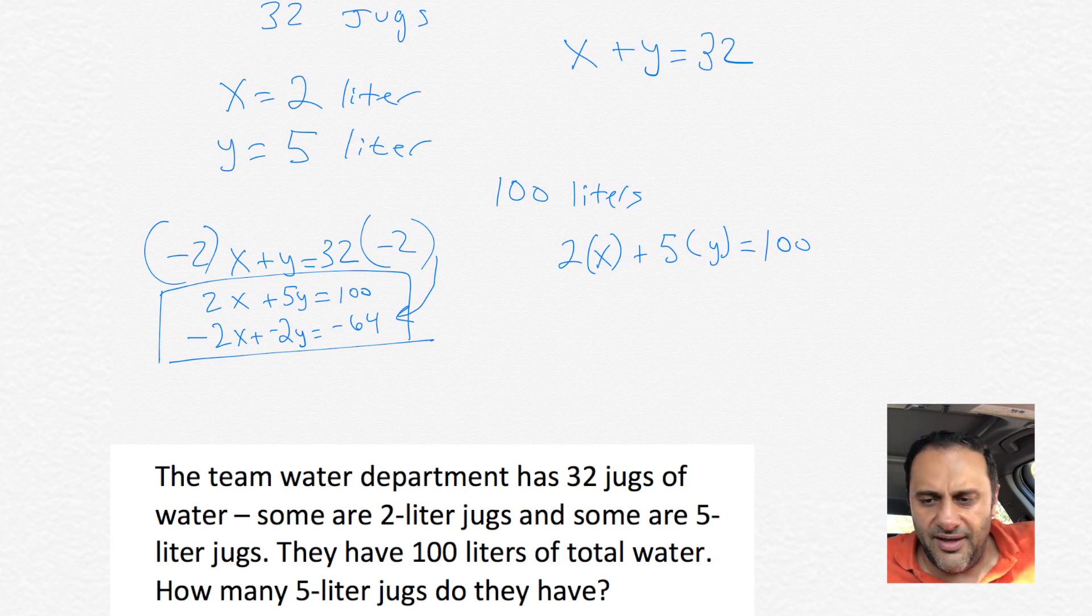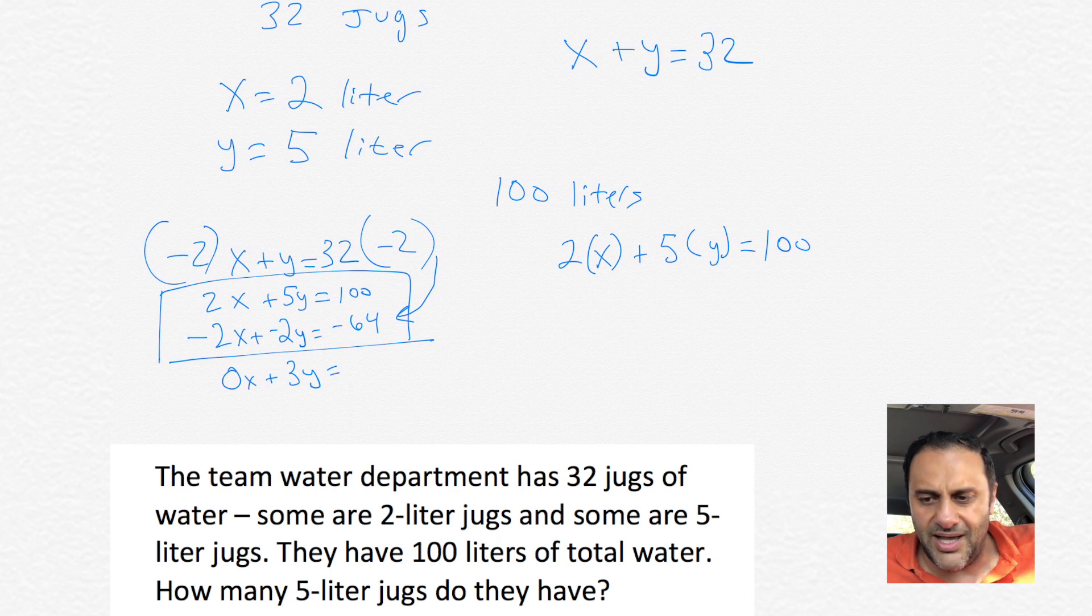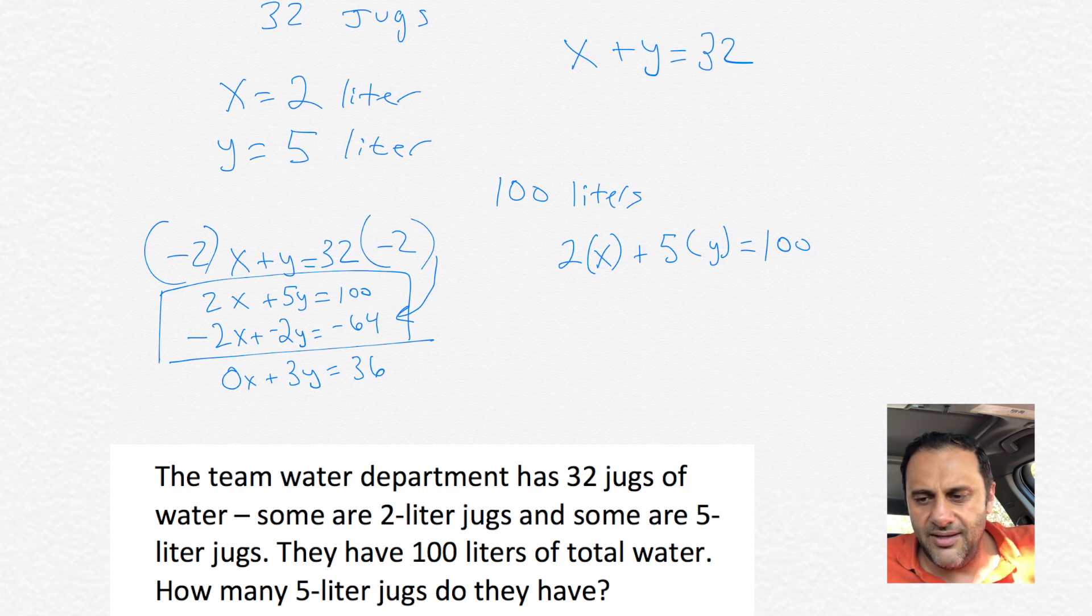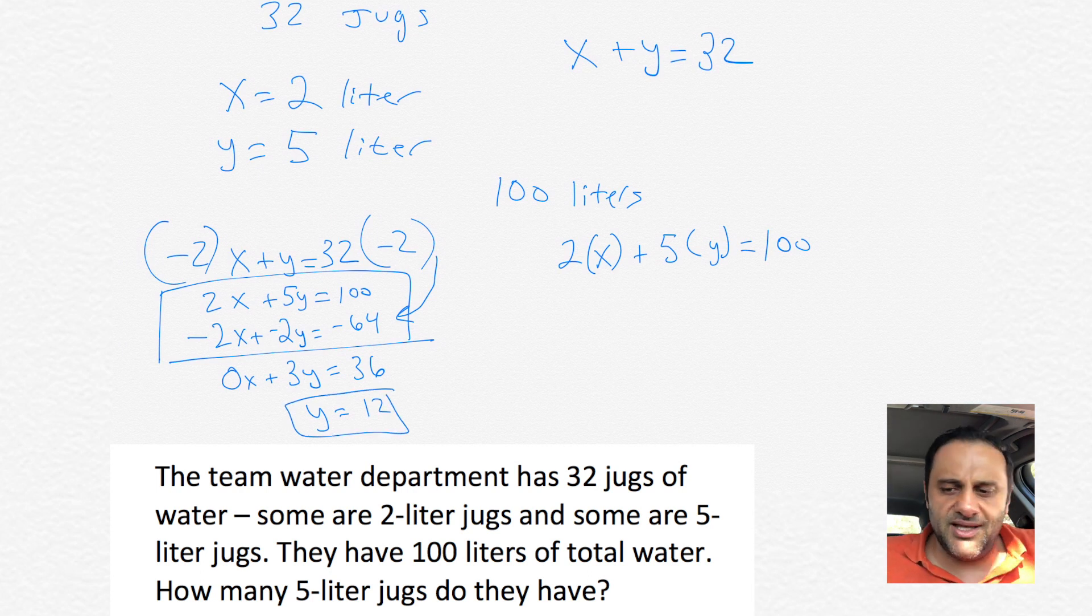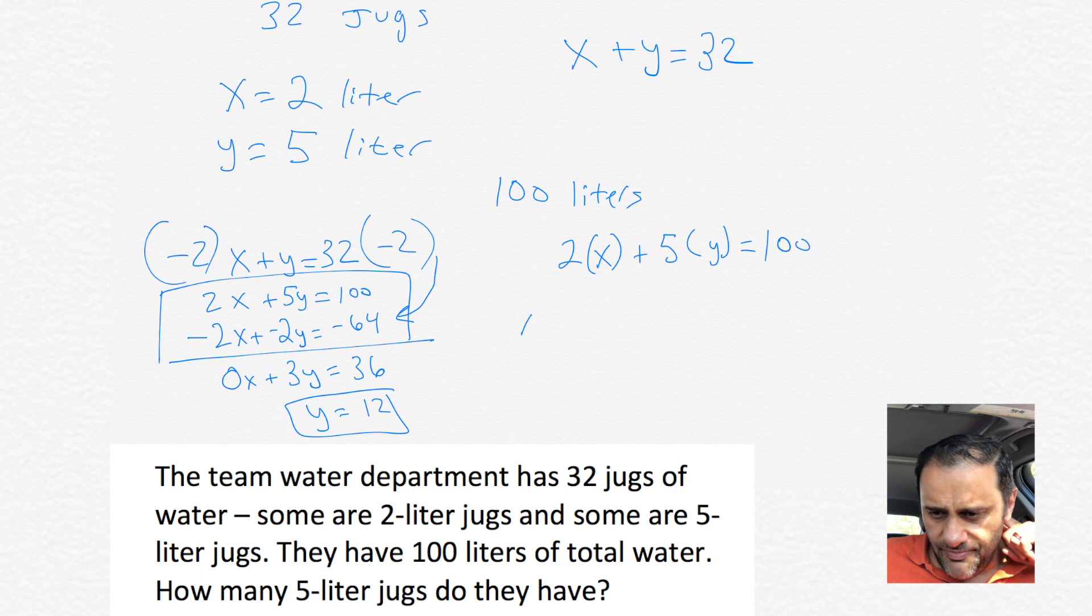And then you distribute that negative 2. You'll have negative 2X plus negative 2Y equals negative 64. And now you see if we line it up, we can get rid of the X unknown. So we could add up the 2X plus 5Y equals 100 to negative 2X plus negative 2Y equals negative 64. And when we line it up that way, we're allowed to add them all up. And as long as we line them up that way, 2X plus negative 2X equals 0X, and 5Y plus negative 2Y equals 3Y, and 100 minus 64 equals 36. So now we're gonna have 3Y equals 36. We divide 3 to each side, we get Y equals 12.